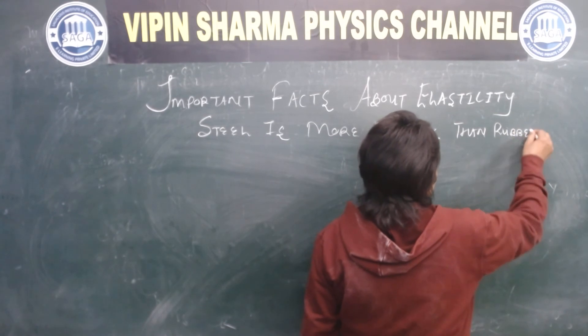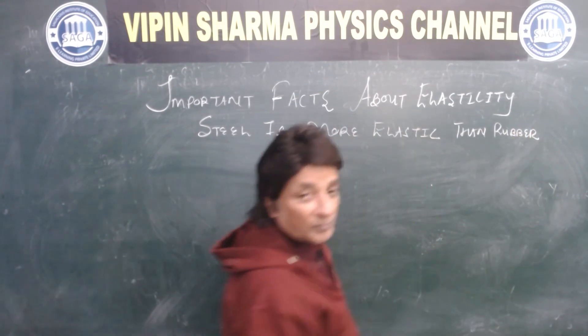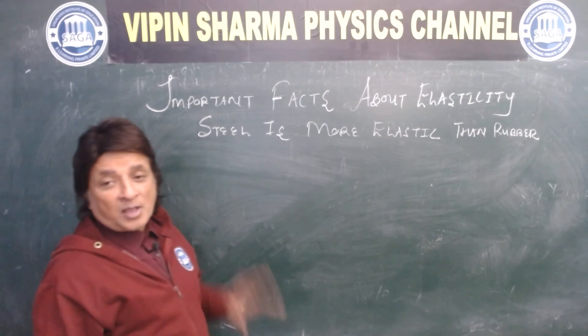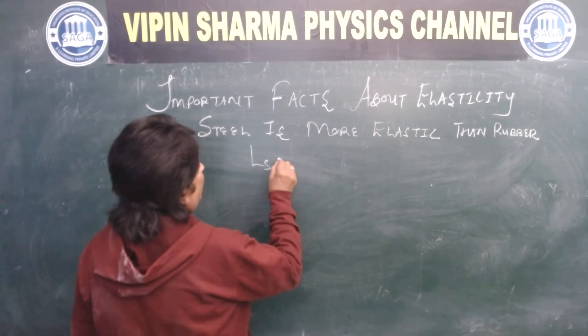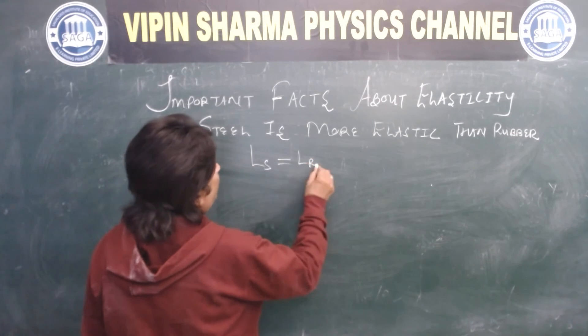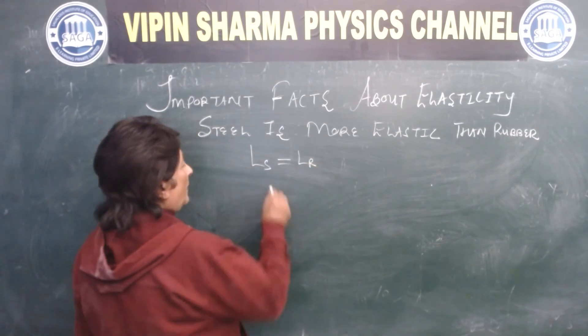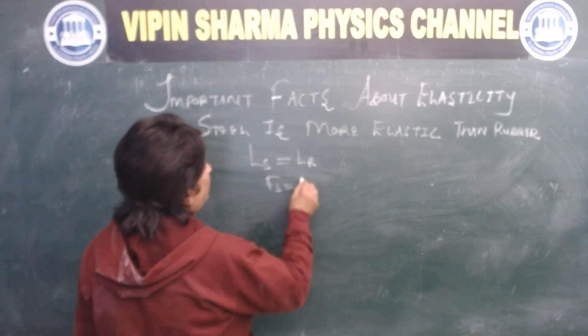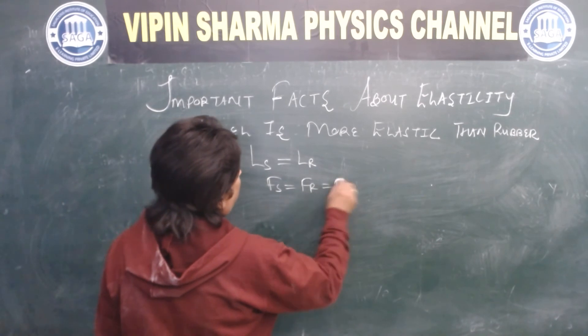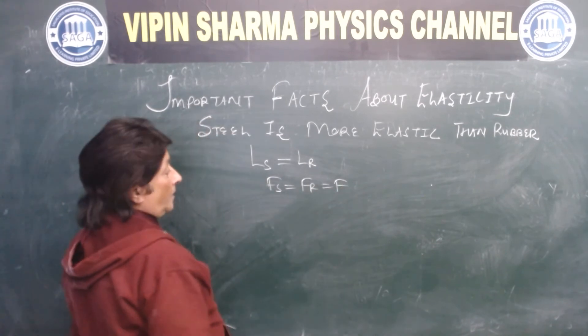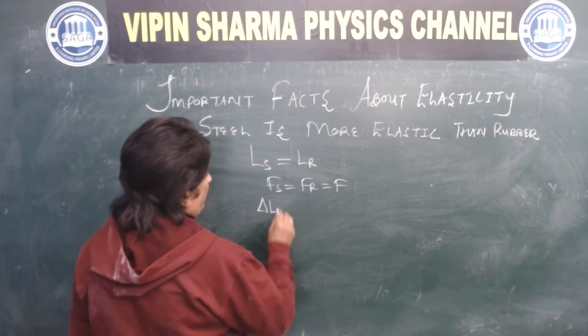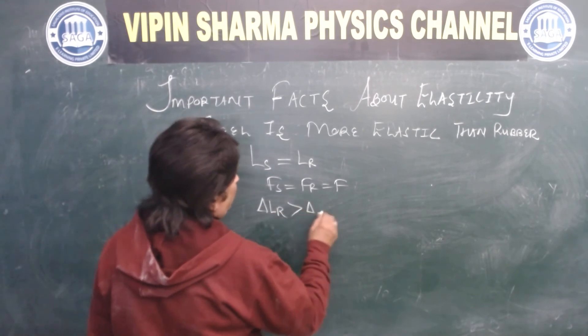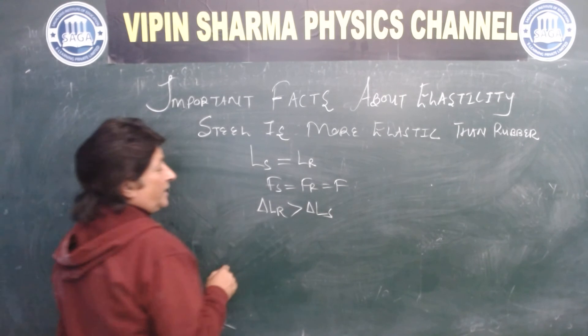Take length of steel ls, length of rubber lr. Force on steel is equal to force on rubber equal to f. Change in length of rubber delta lr for the same force is greater than delta s.